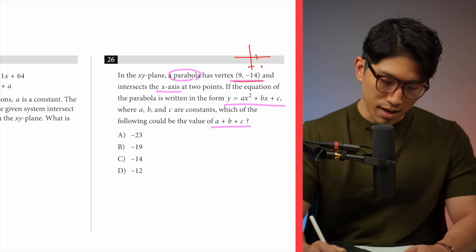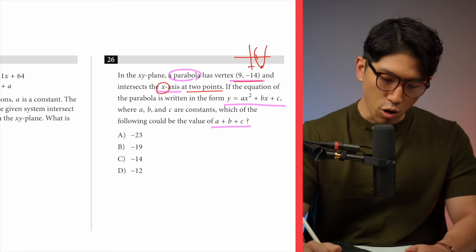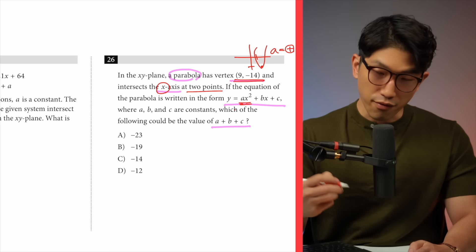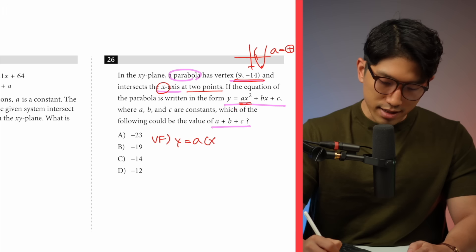Because the parabola intersects the x-axis at two points, the parabola opens upwards, which means our a value is going to be positive. And because the question gives us the location of the vertex, we're going to go straight into vertex form — which is a key question pattern for the SAT. Vertex form looks like y equals a times (x minus h) squared plus k, so that's a(x minus 9) squared minus 14 in this question.